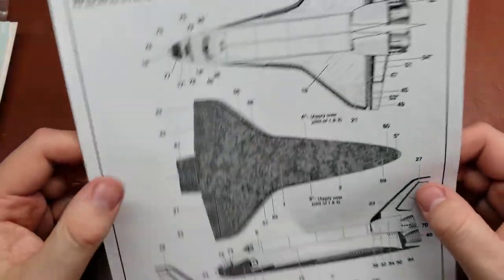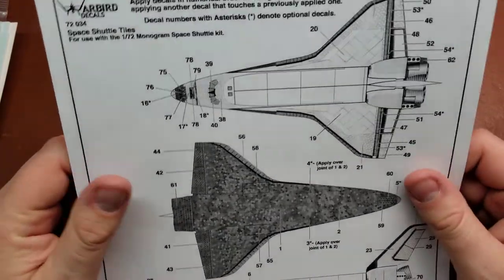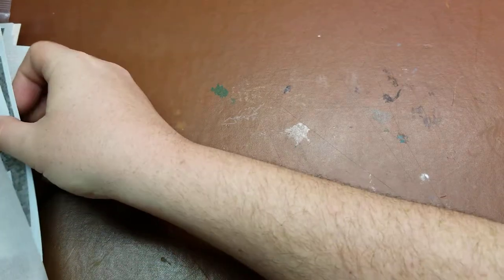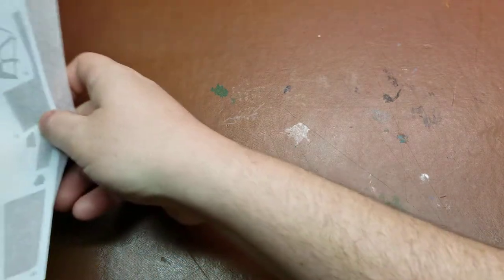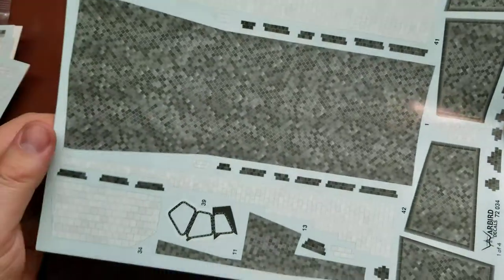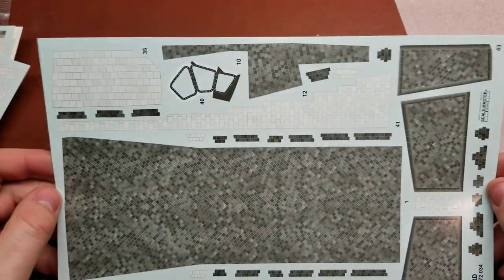All the way to the back, and again this is for the Monogram release which has become extremely scarce and also, as I mentioned, is a massive, massive model. If you've not seen one in person, I believe the solid rocket boosters alone are about two feet in length.